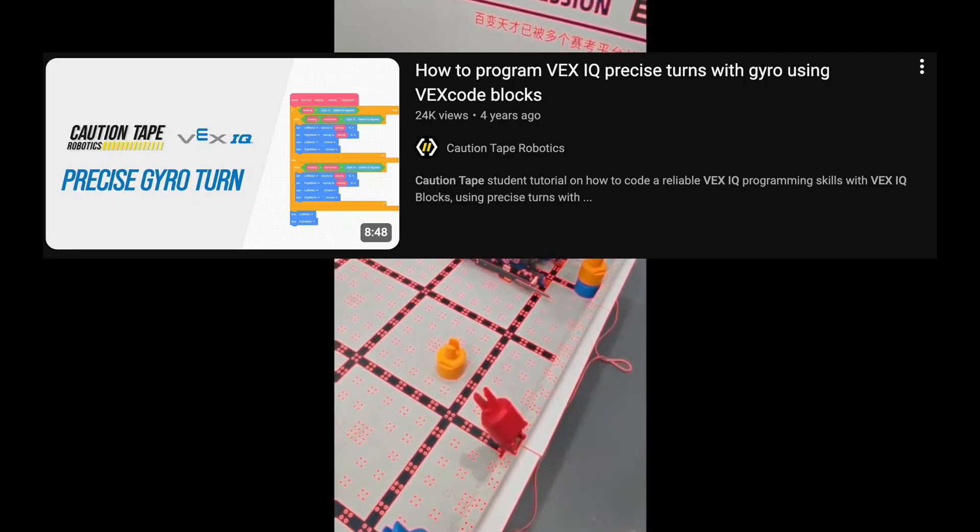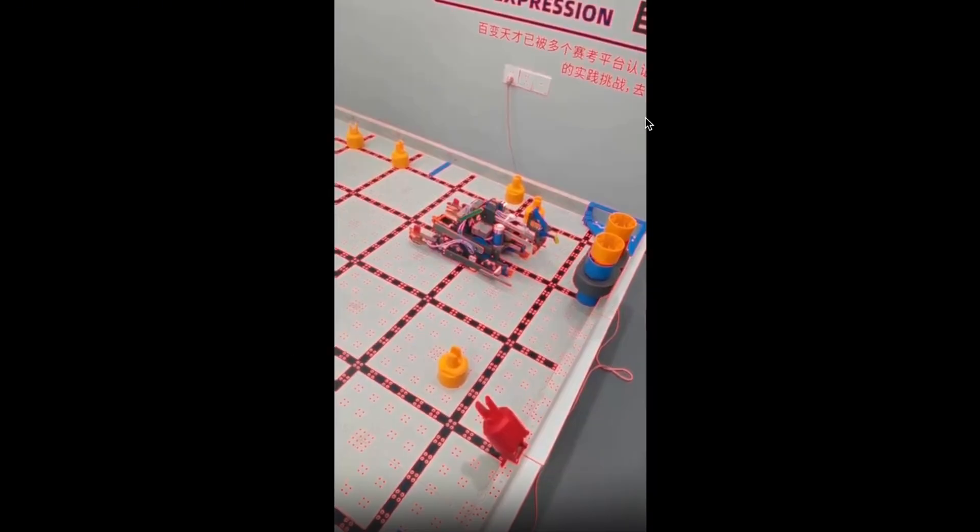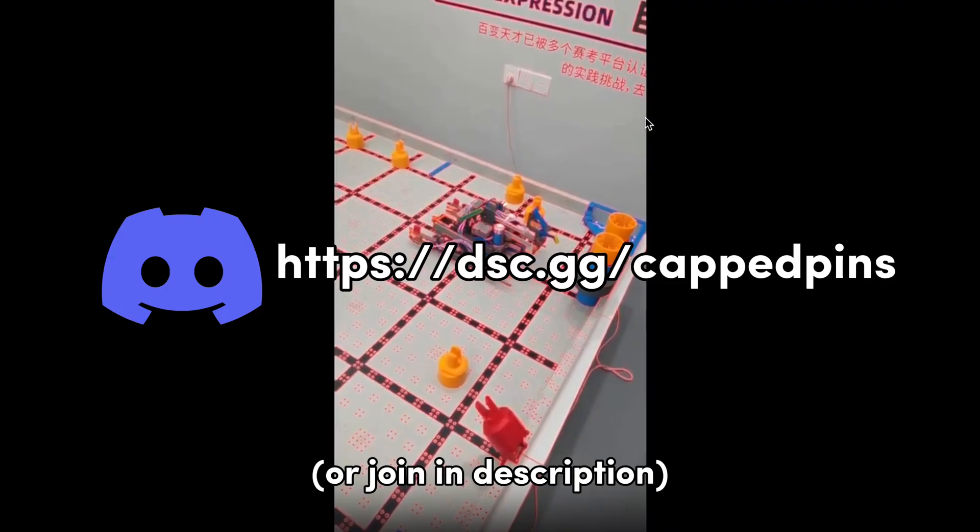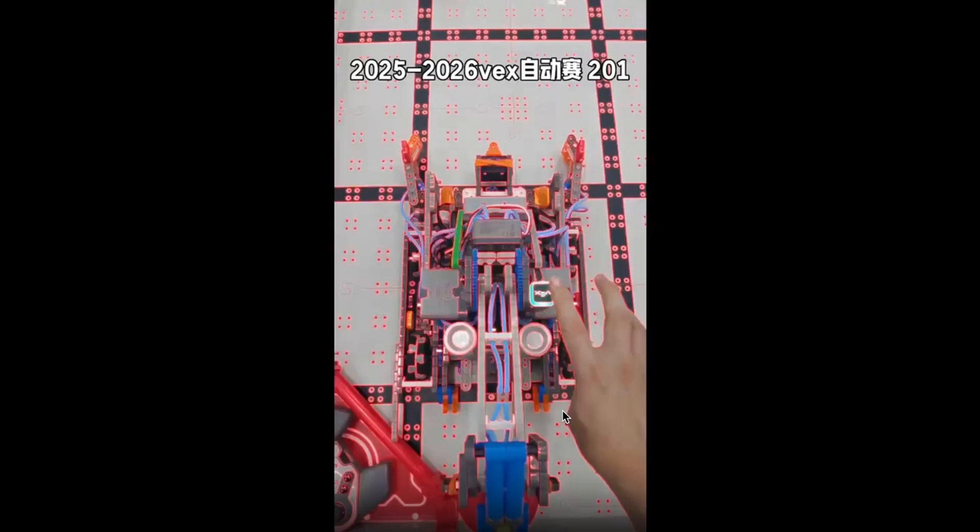You can check out Caution Tape Robotics' video on PID loops. It's a great guide for keeping your robot driving straight. You can also join our Discord server and look in the hashtag guides channel where we've got a PID guide and some sample code for you guys to look at and get inspiration from. So thanks again for watching. If this analysis helped you, please consider liking and subscribing and see you guys next time.